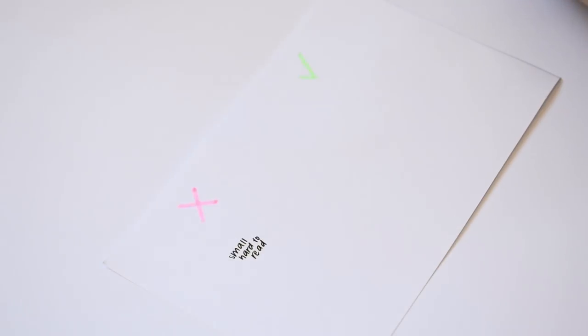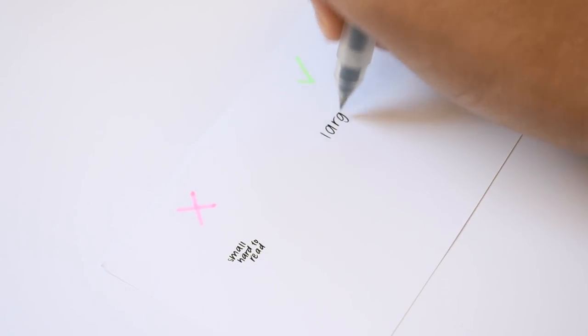My first tip is to write larger. Aim for your letters to be at least half the height of the line, because the bigger your writing is, the easier it'll be to see all of the little lines and loops that make up the letters.